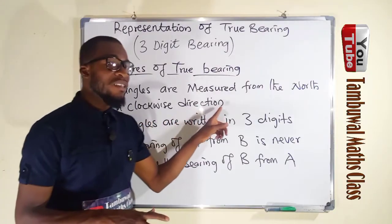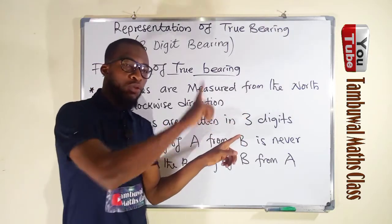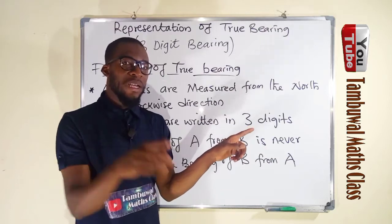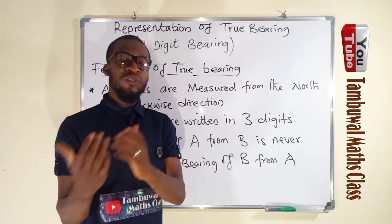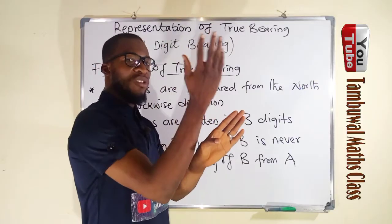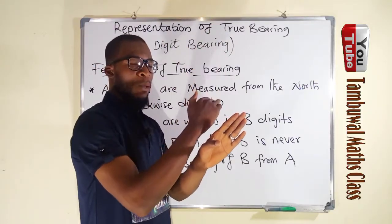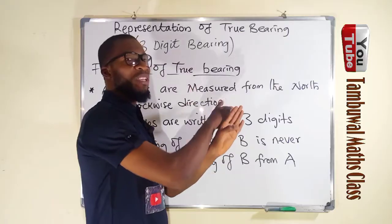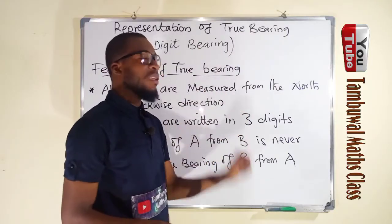In compass bearing, we sometimes measure them from north to west, which is anticlockwise. But in true bearing, it must be clockwise. This is an important feature.